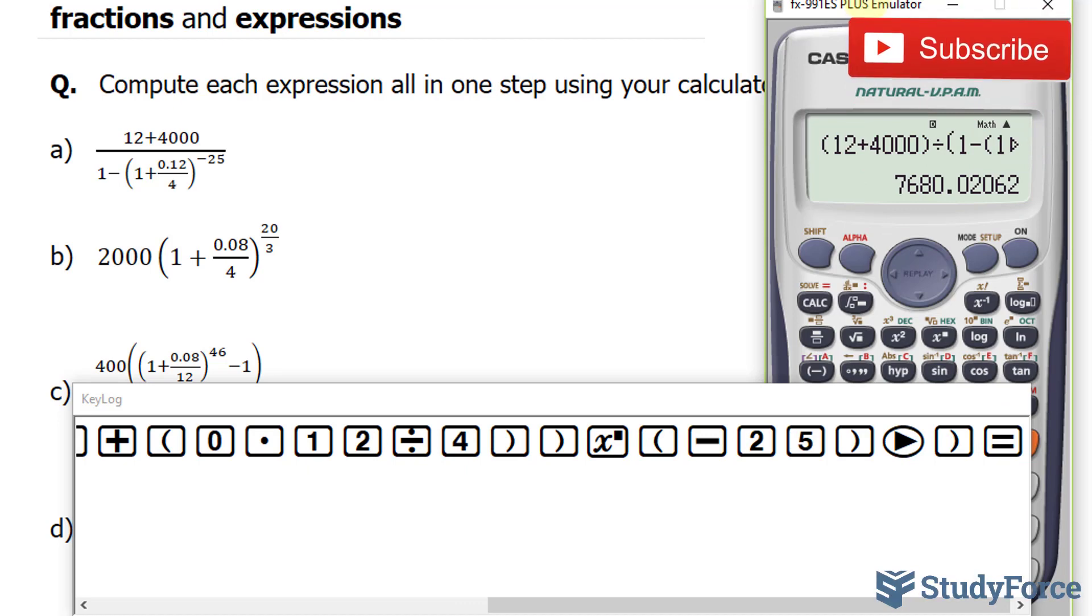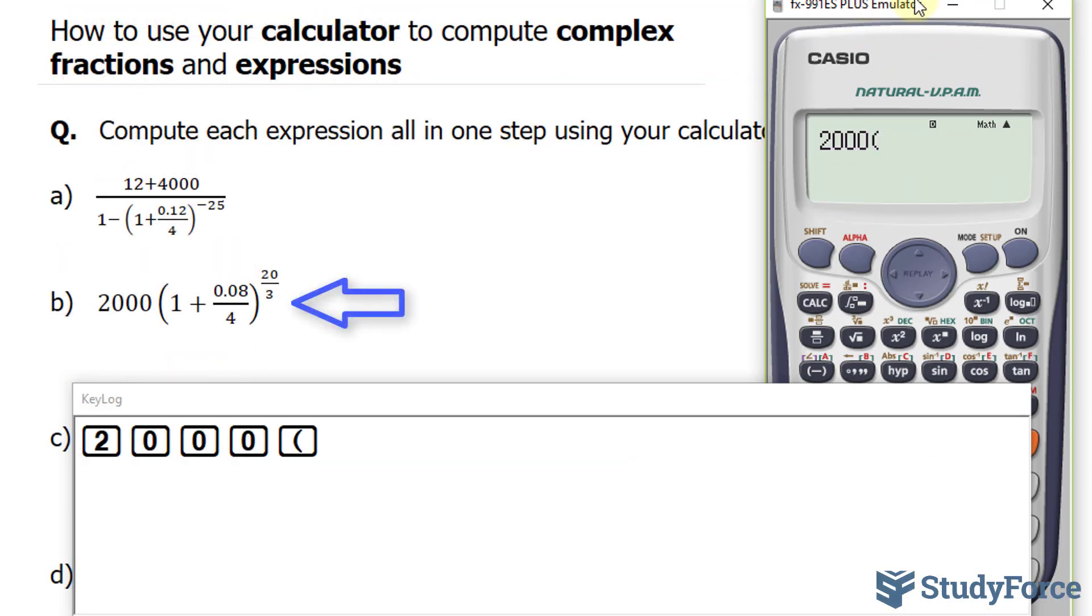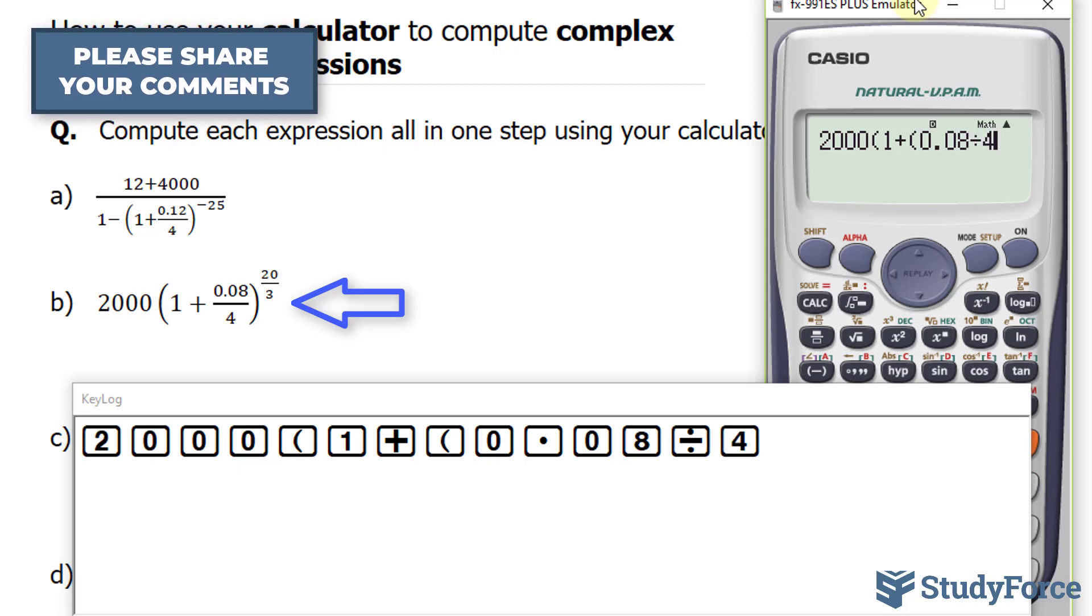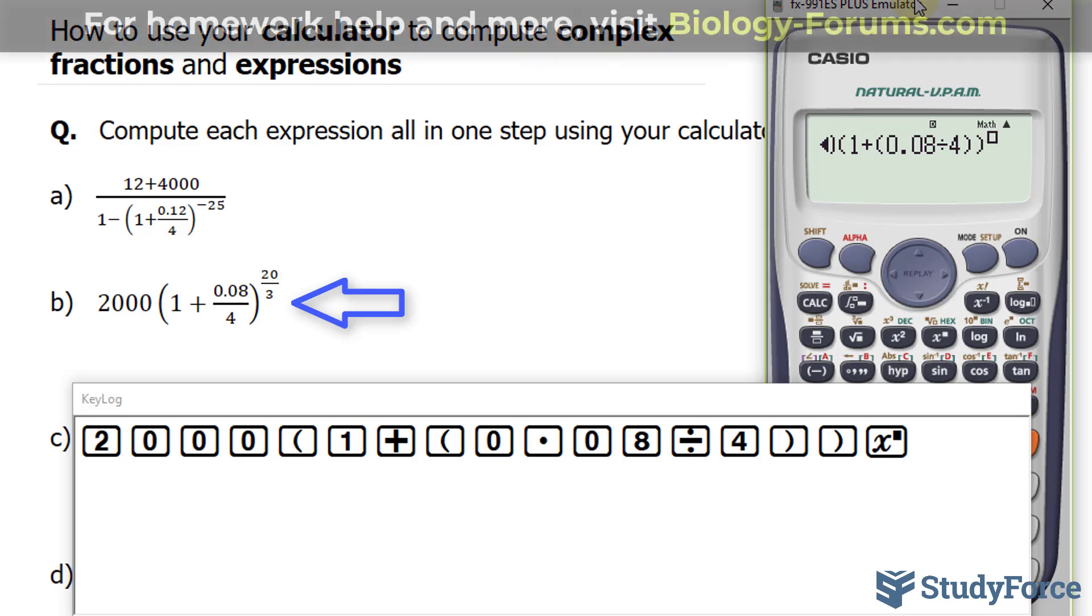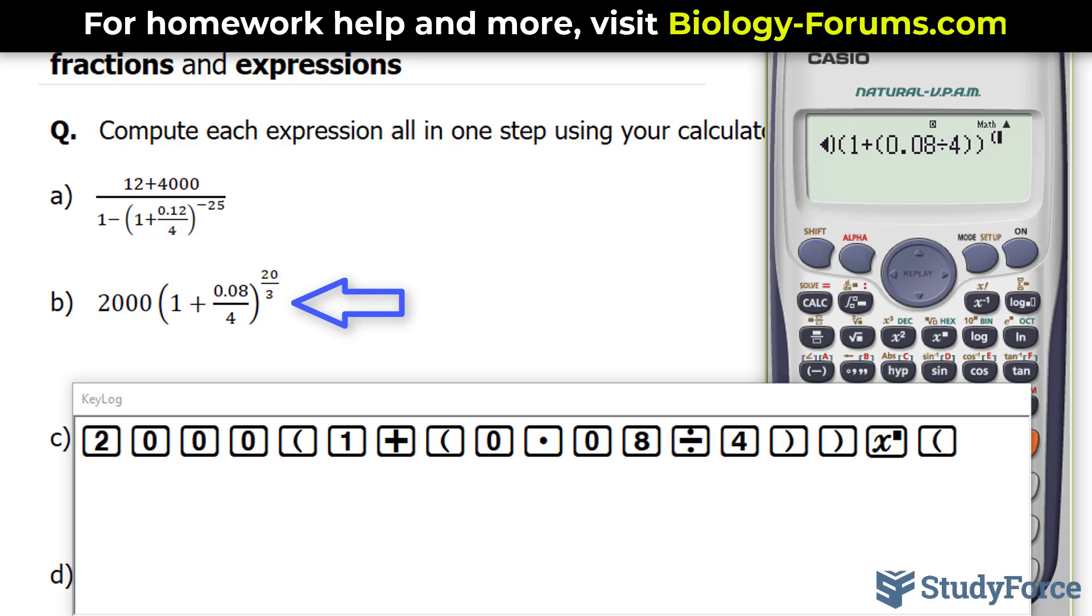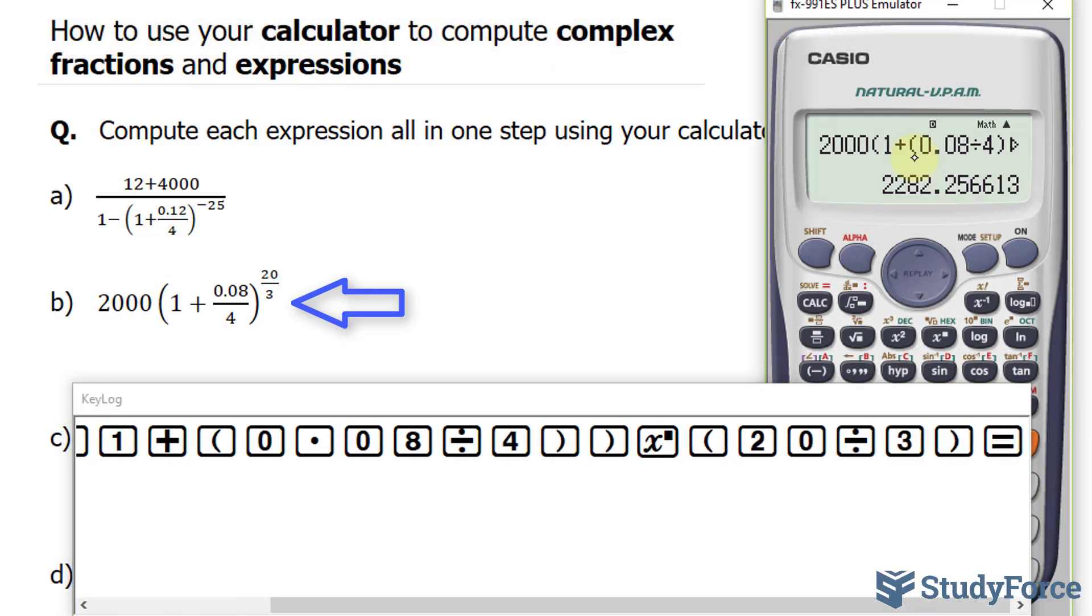Let's move on to question B. This time we have 2,000. And I've cleared my key log. Bracket 1 plus. There's a fraction inside of this expression, so we will put that fraction in its own parentheses: 0.08 divided by 4. We want to close the bracket that we opened and raise that to the power of 20 over 3. Remember what I suggested earlier with exponents: you want to place them in parentheses as well, just so that your calculator doesn't get confused as to what it is you're doing. So you want to put 20 over 3 in brackets: 20 divided by 3. You should end up with 2,282.25 rounded to two decimal places. The number here should be 26.